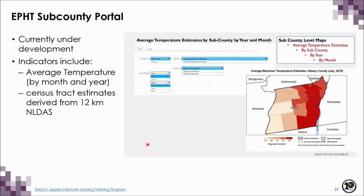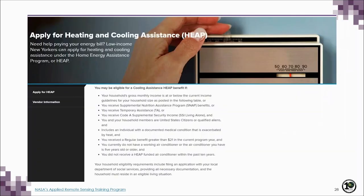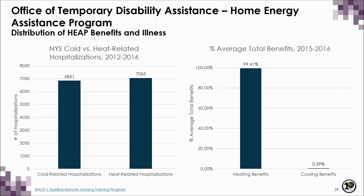We also provide sub-county measures so people can look at areas within a county that experience higher temperatures. For example, this is a county map of Albany where you can see that the inner city areas experience higher temperatures. This can help local health departments identify where to set up cooling centers in case of a heat event. Another avenue has been the New York State Home Energy Assistance Program, a program for low-income residents who may have a demonstrated medical need for a cooling device in their home.